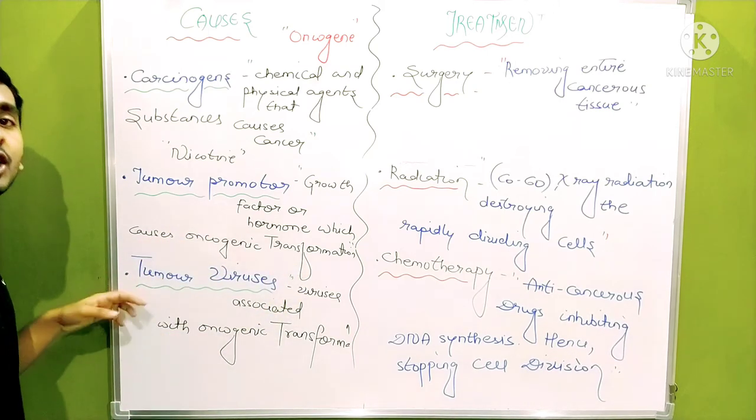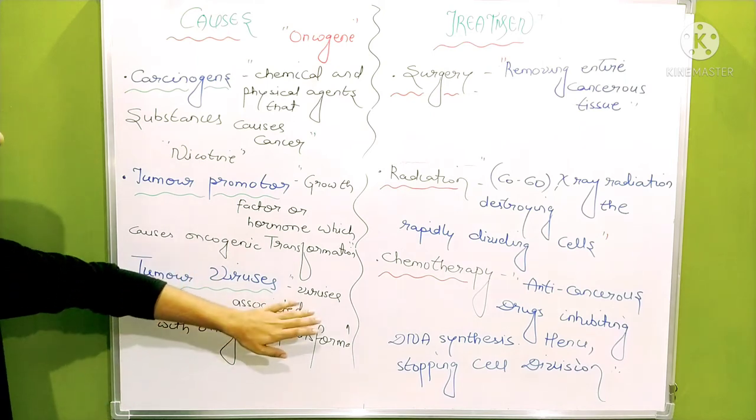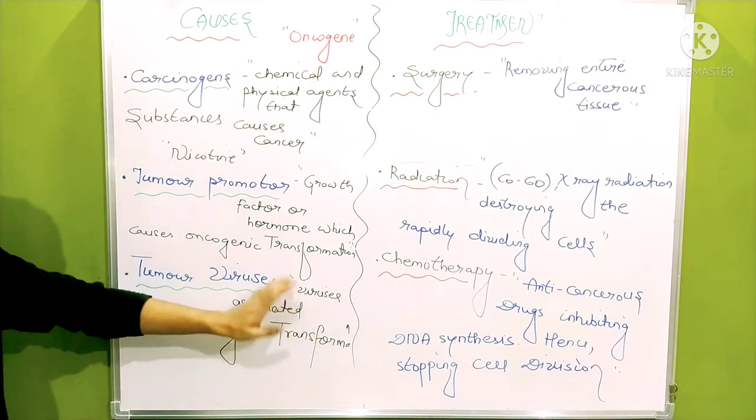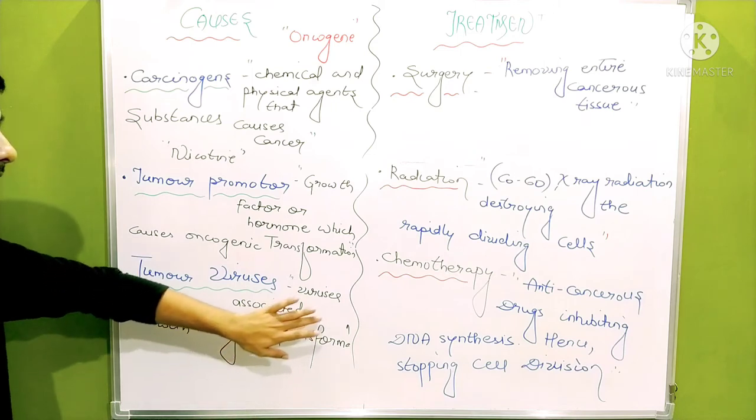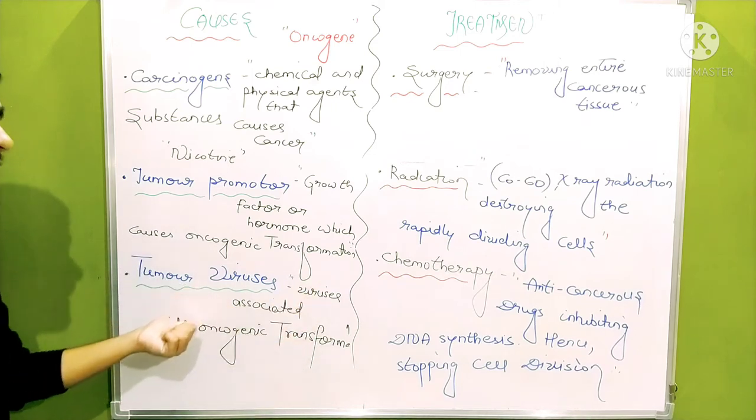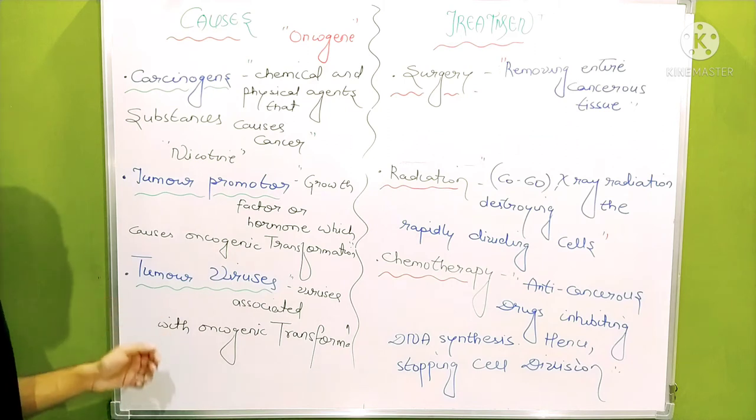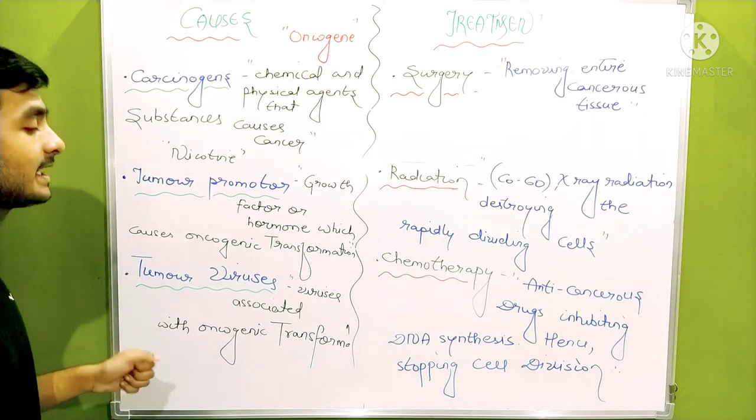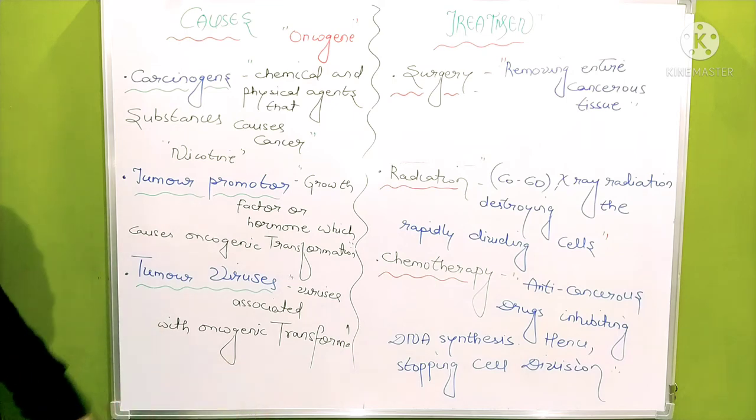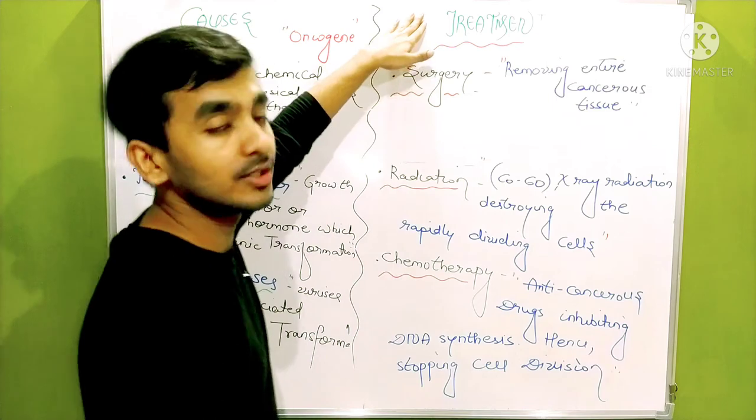Then tumor viruses. Tumor viruses are those viruses which have DNA and RNA as their genetic material. But the oncogenes incorporated in their genome are activated. And thus when they attack a human host or organism, virus DNA or RNA will get incorporated with that host DNA, thus leading to oncogenic transformation.